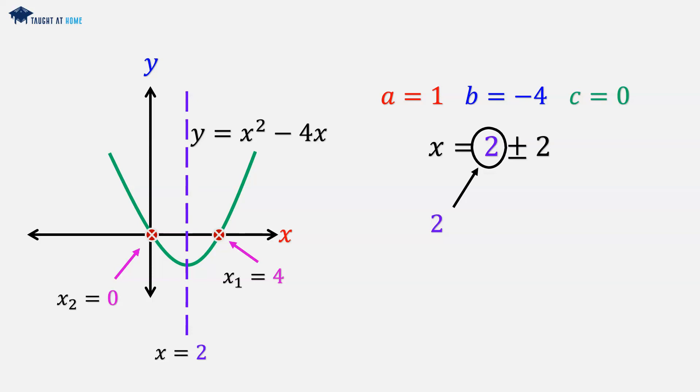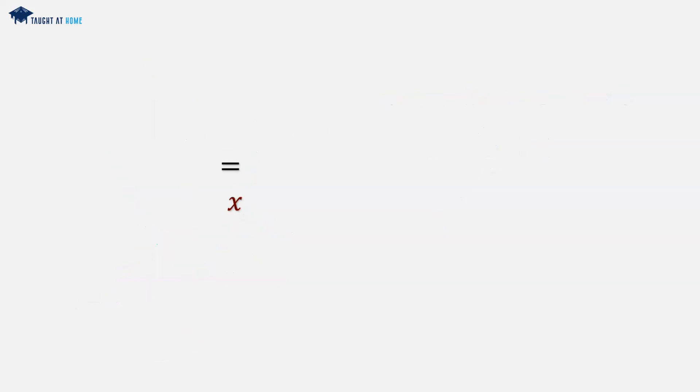And so we've got an interesting part of the quadratic formula which is the axis of symmetry. If we inspect the quadratic formula and we split this up into minus b over 2a plus or minus the square root of b squared minus 4ac over 2a, then we've got two parts to this formula.